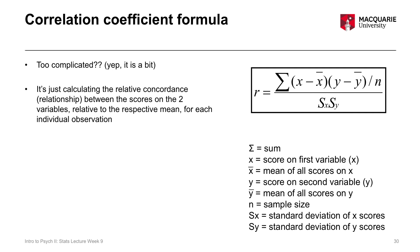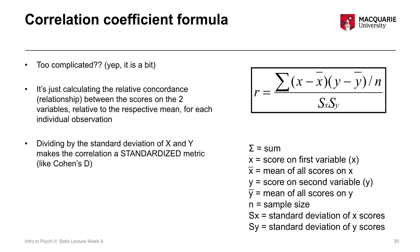Conceptually, what the formula is doing is calculating the relative concordance — the co-occurrence, the relationship between scores on these two variables — relative to each variable's respective mean, for each observation in our dataset. The fact that the denominator of this formula is the standard deviation of x and the standard deviation of y is how we end up with a standardized effect size measure, which is what our correlation coefficient actually is.